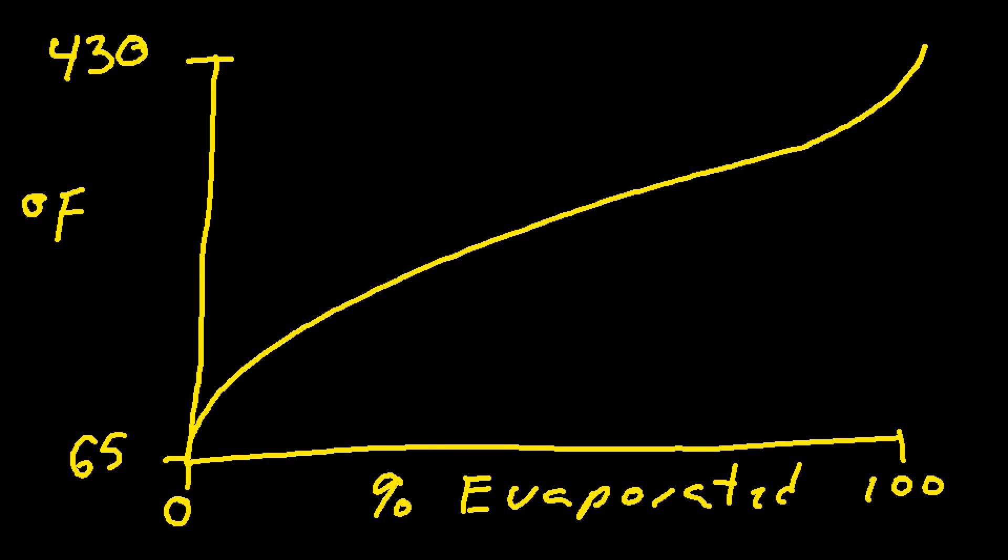There's some special terminology we should talk about. This temperature here, 65 degrees Fahrenheit, at the beginning of the distillation curve, we would call that the initial boiling point. That's the boiling point where it just started to vaporize and started to come over to the top of the boiling flask and into the graduated cylinder. The temperature that boiling is done at when we've boiled everything over is called the final boiling point, or FBP. So the initial boiling point and the final boiling point.